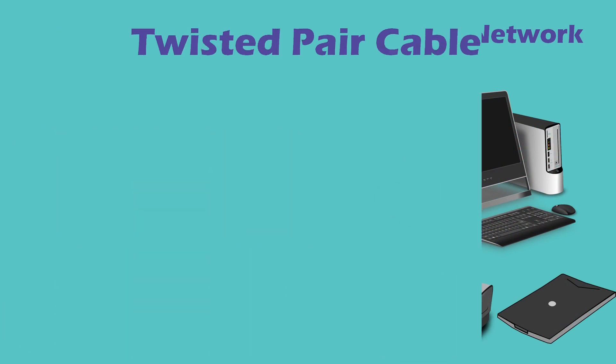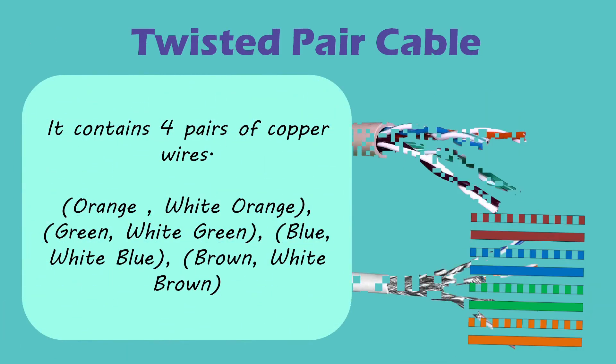The most popular connecting media is the twisted pair cable. A typical twisted pair cable used in an Ethernet network consists of four pairs of copper wires. The eight wires are colored as orange, white-orange, green, white-green, blue, white-blue, brown, and white-brown. Initial twisted pair cables were unshielded, but later, shielded twisted pair cables were also introduced.